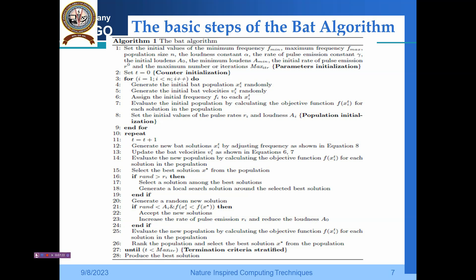Evaluate the new population by calculating the objective function f(x_i(t)). For each solution in the population, rank the population and find x* until t < maximum iterations. This is the termination criteria; until satisfied it runs, then it produces the best solution.